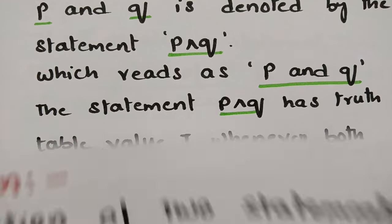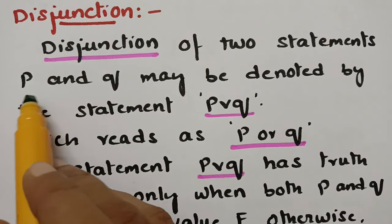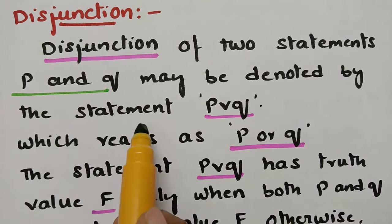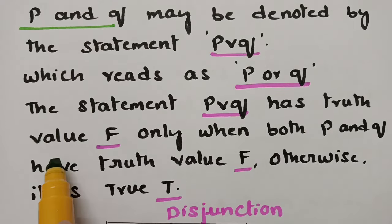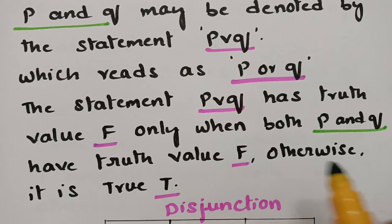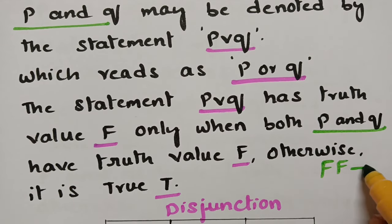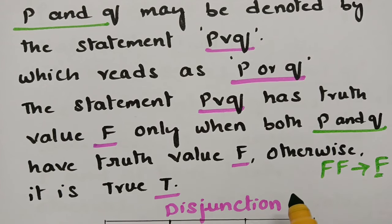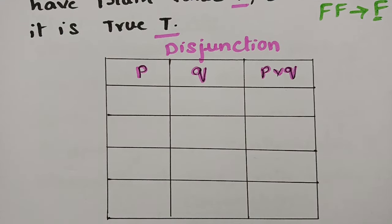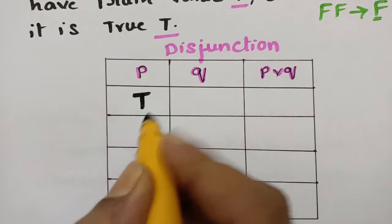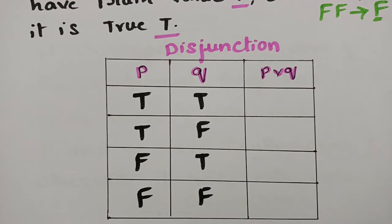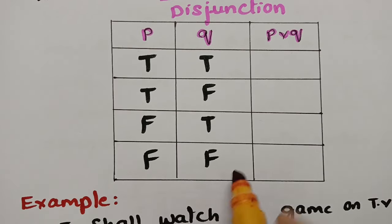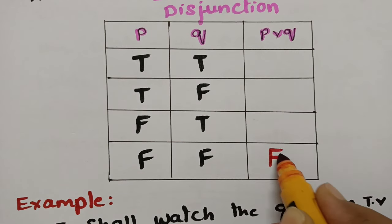Talking about disjunction: the disjunction of two statements P and Q is denoted by P ∨ Q, read as 'P or Q.' The statement P or Q has truth value false only when both P and Q are false. If P is false and Q is false, obviously the statement is false. Otherwise, it is true.